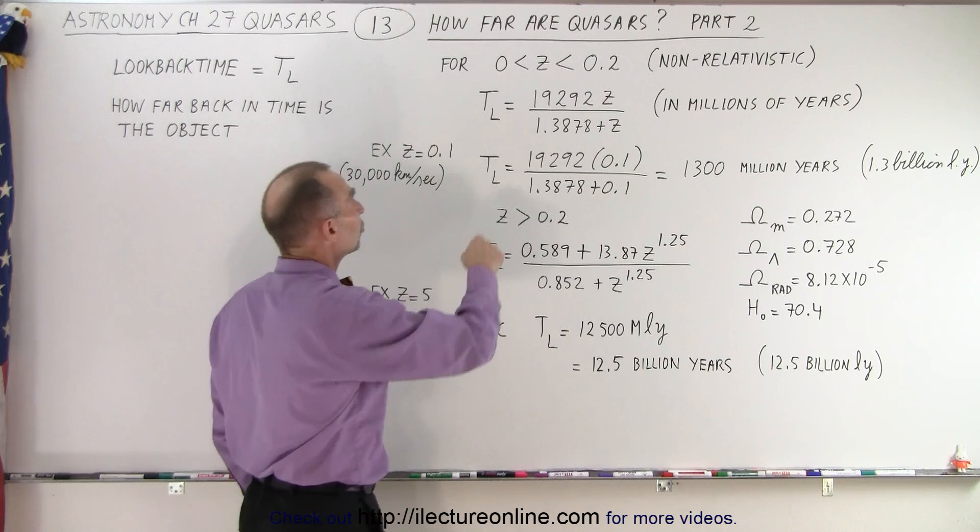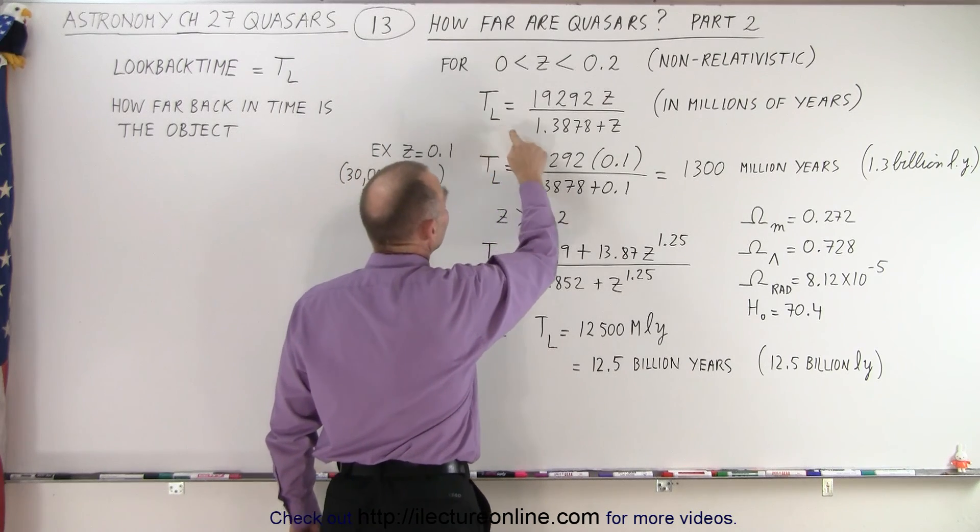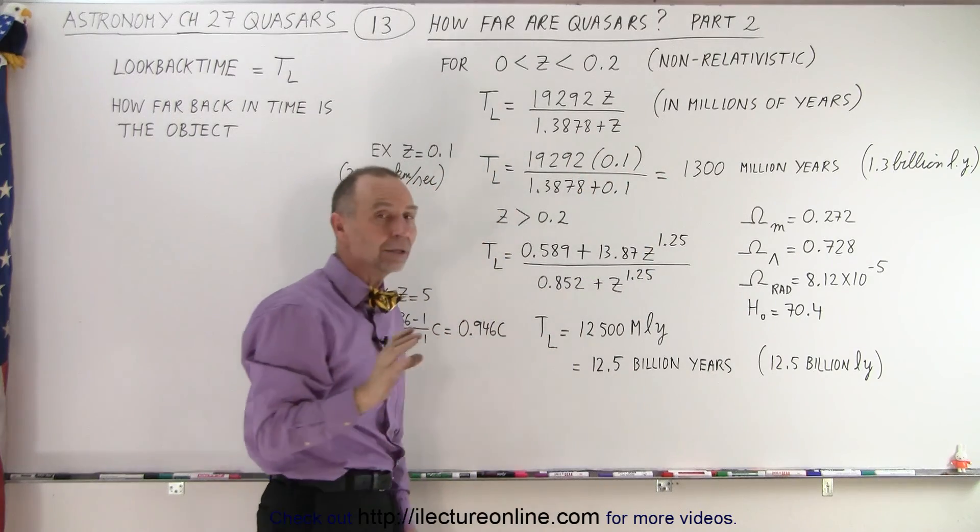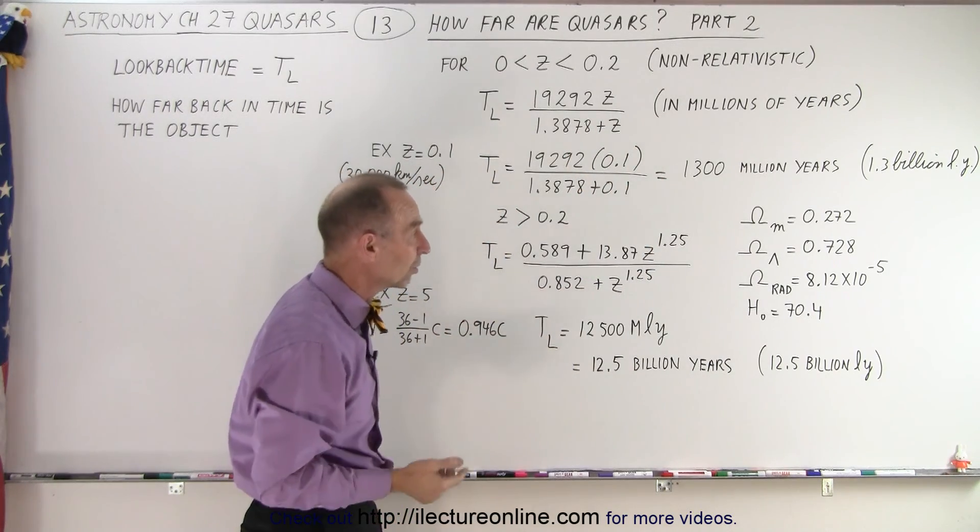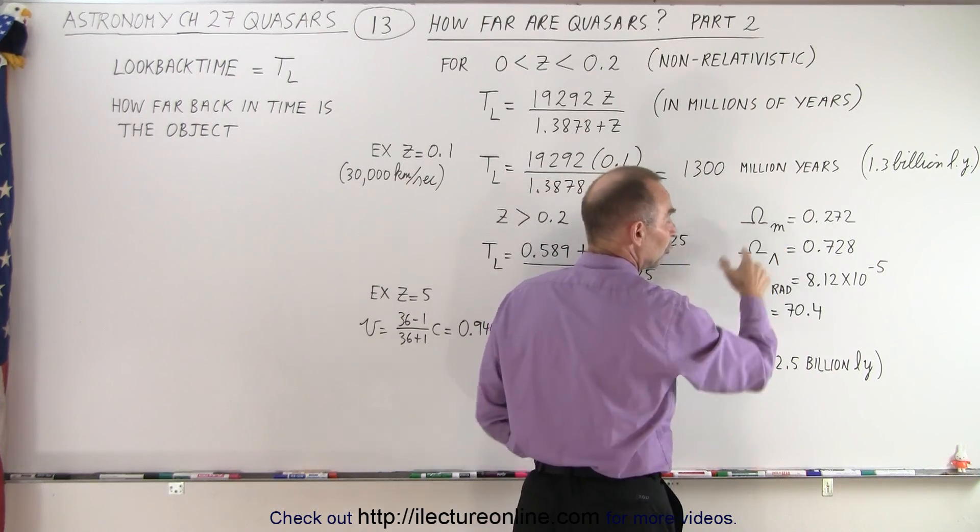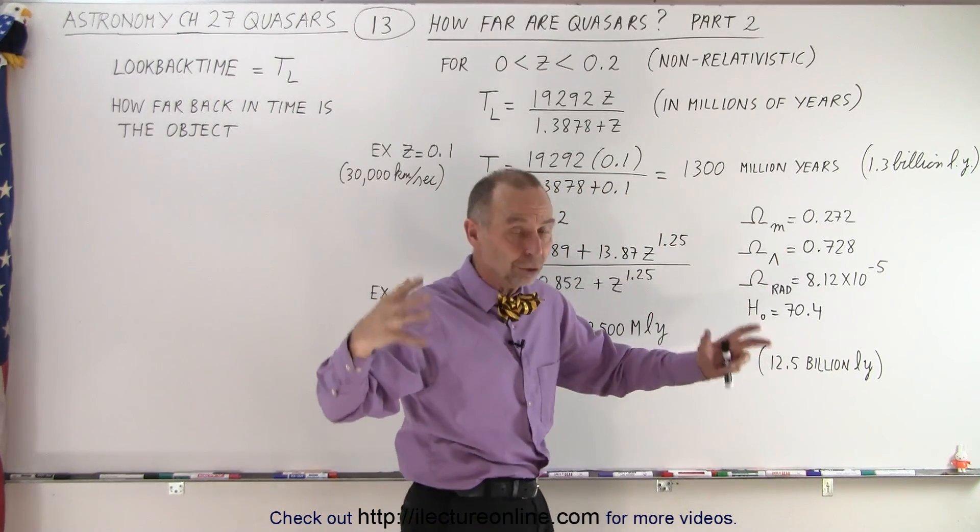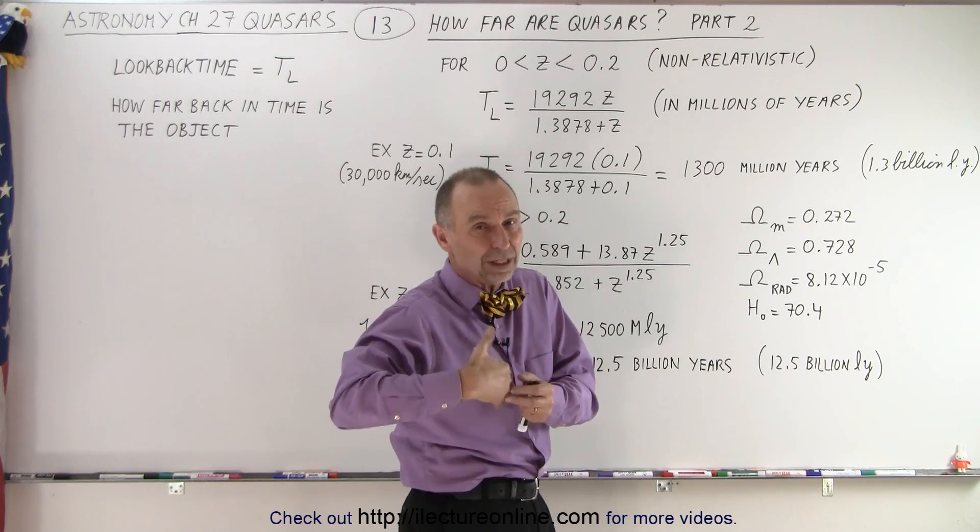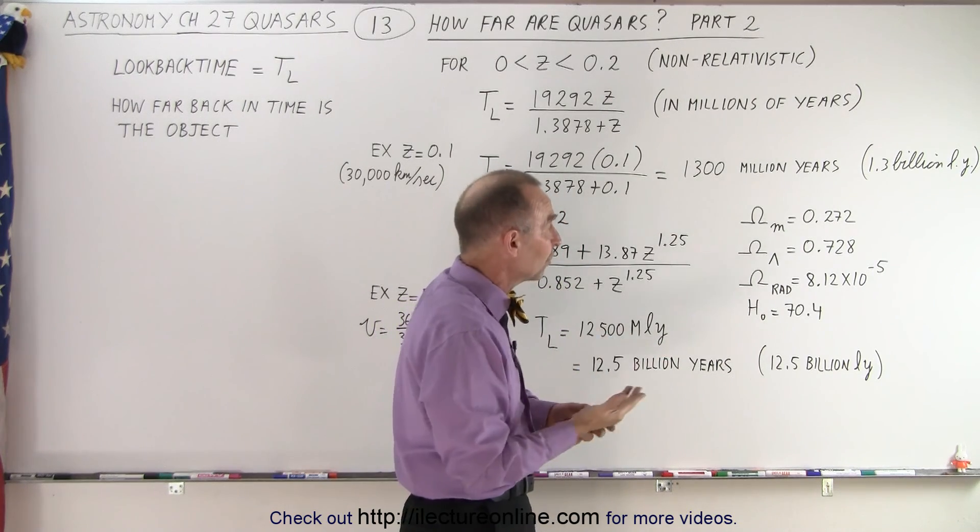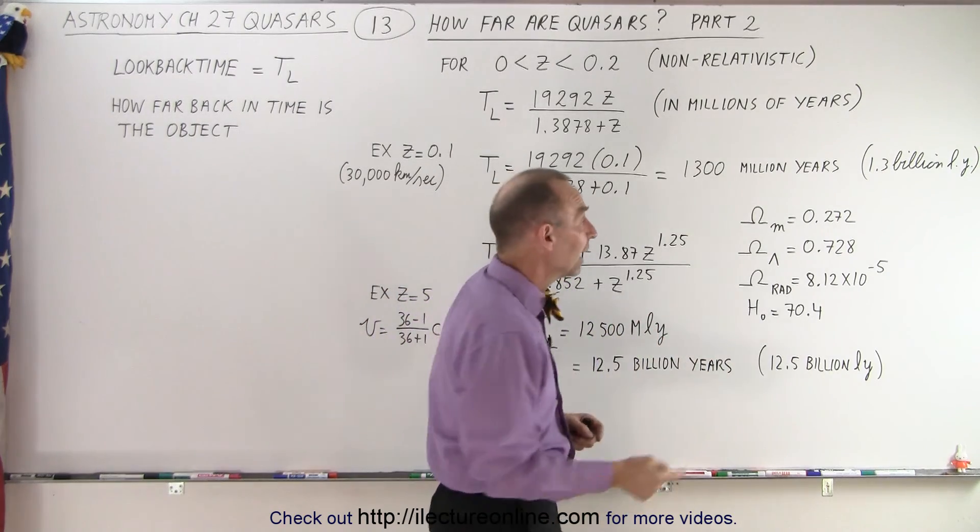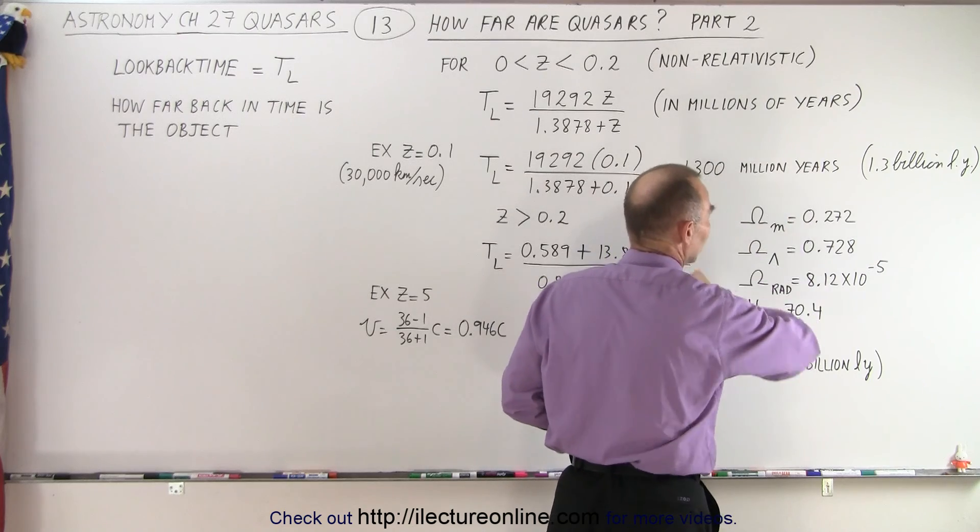So the equation to calculate the look-back time is calculated via these constants. These constants are calculated based upon presumptions of four things. The mass equivalent in energy of the universe, so we take all the matter of the universe, including the dark matter, and calculate its equivalent energy. When you calculate the energy, you use E equals mc squared. So take all the mass, multiply times c squared, and that's the energy contained within all the matter of the universe.